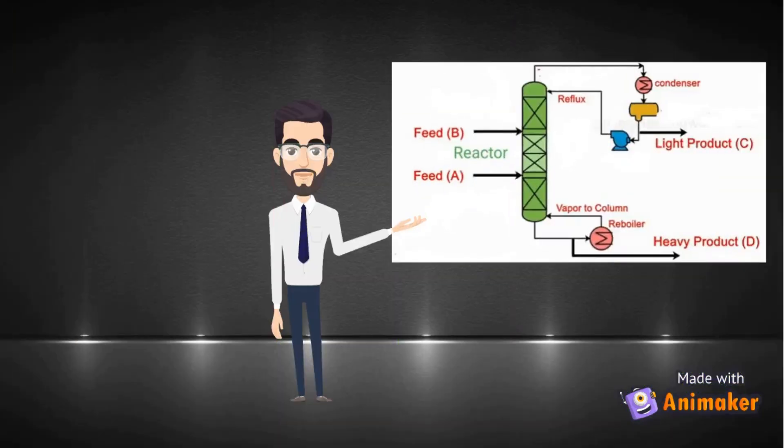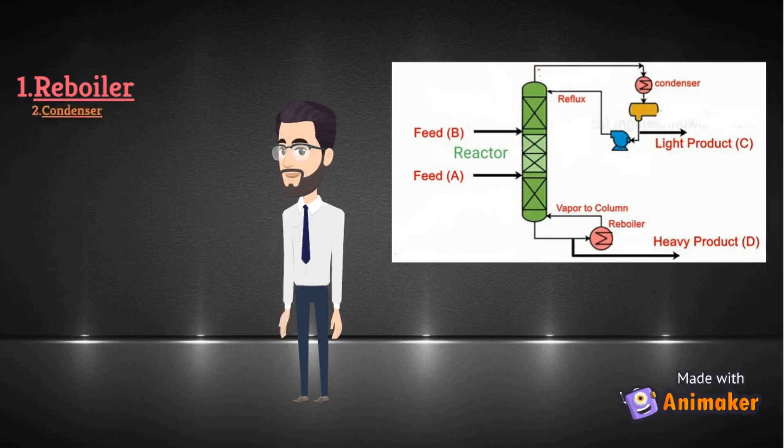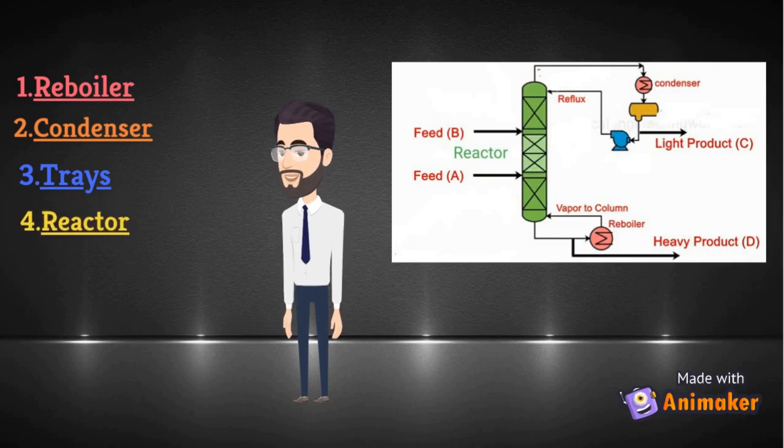These are some parts of reactive distillation. A reboiler is a heat exchanger that is used to generate the vapor supply to the bottom tray of a distillation column. The condenser is used to cool down the vapors and converting it into liquid. Trays are separation devices most often used in distillation towers for desired purity. Reactor is a vessel within which chemical processes are carried out for manufacturing purpose. Apart from these, the reflux drum and pump are also there.